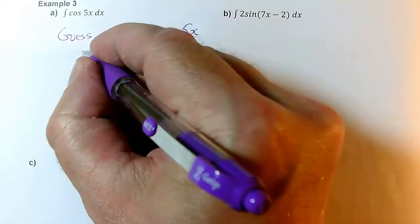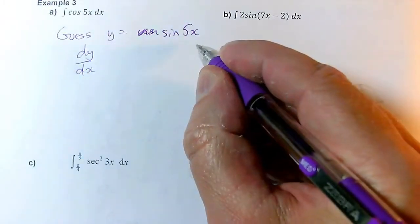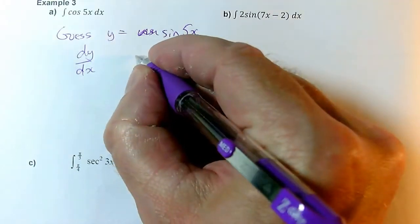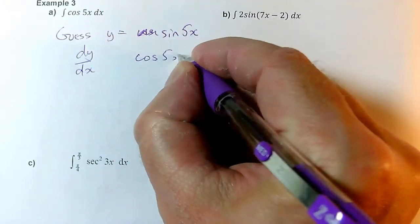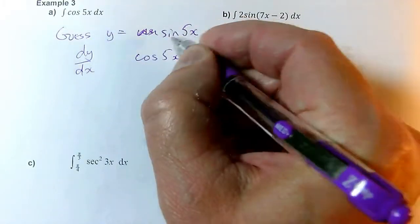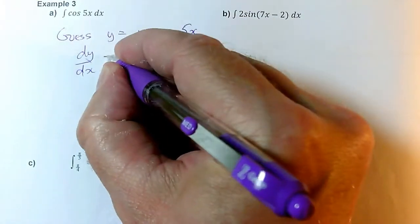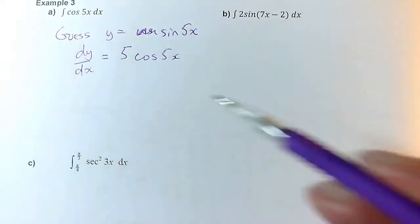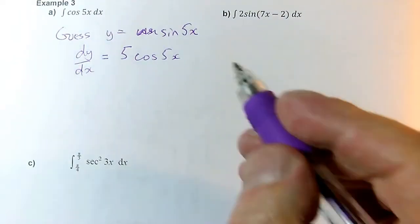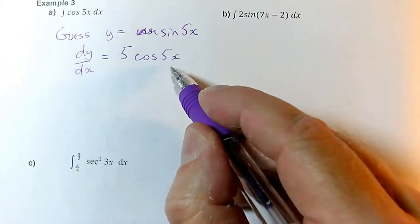If I differentiate my guess, if I get dy by dx, then I know how to differentiate this. We get sine differentiates to cos, so we do get cos of 5x. But because of the 5x, we get a 5 popping out. Use the chain rule if you have to, but use the rule for differentiating sine of constant times x. So we get 5 times cos of 5x.